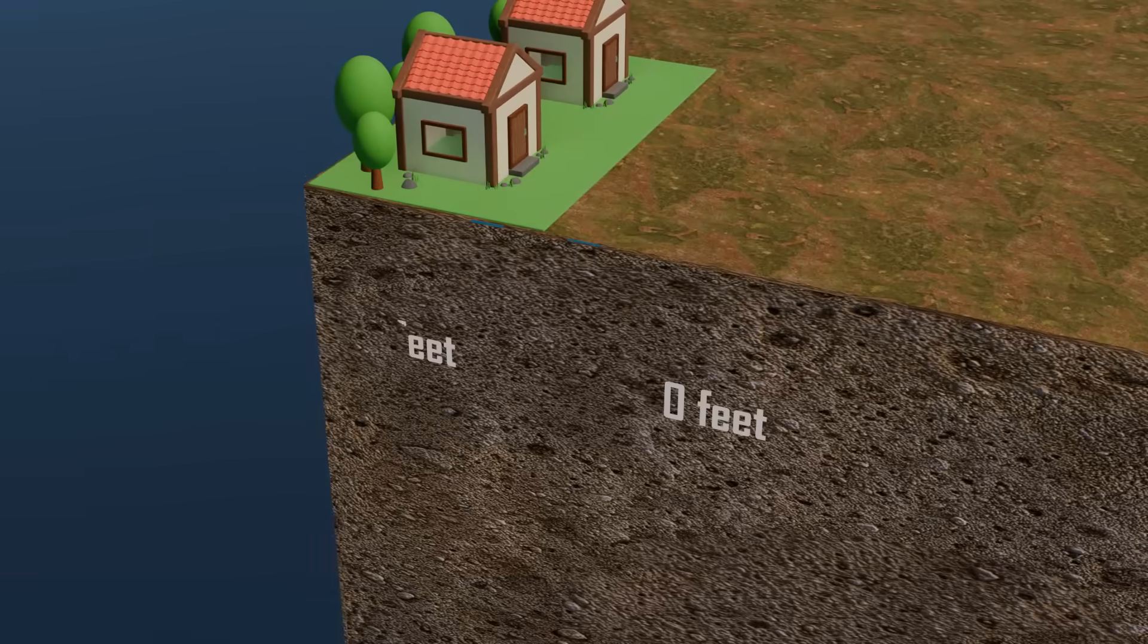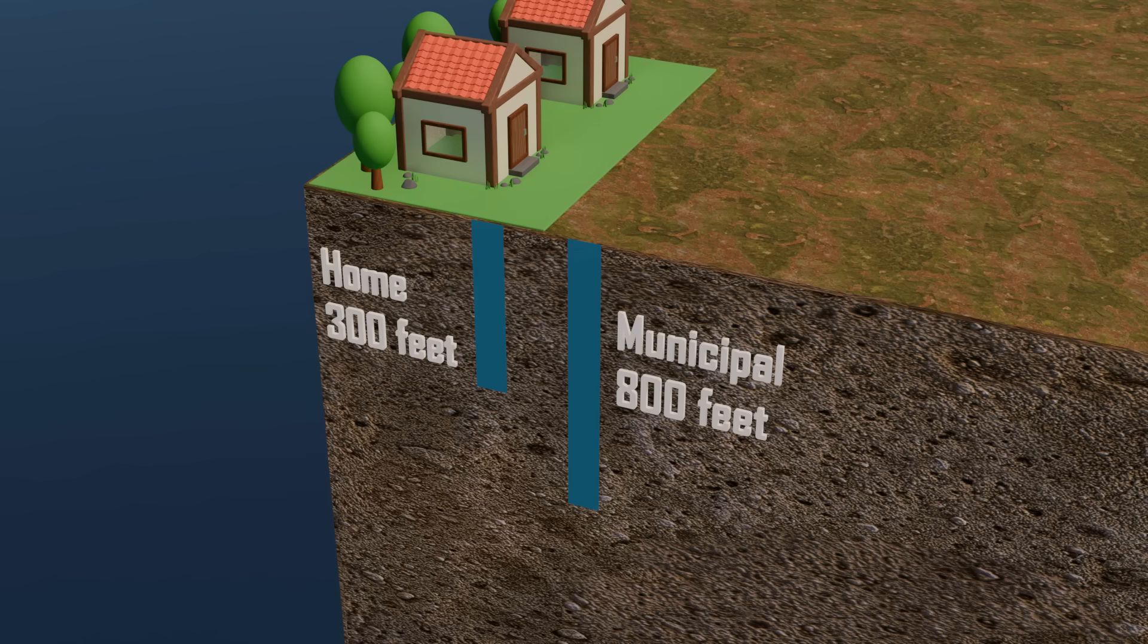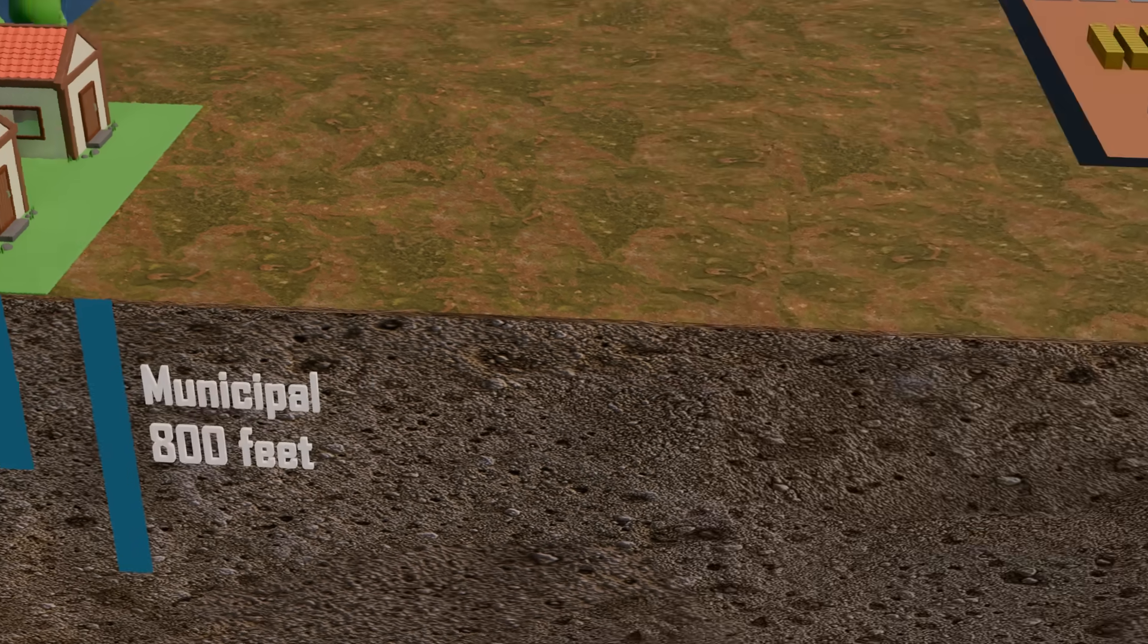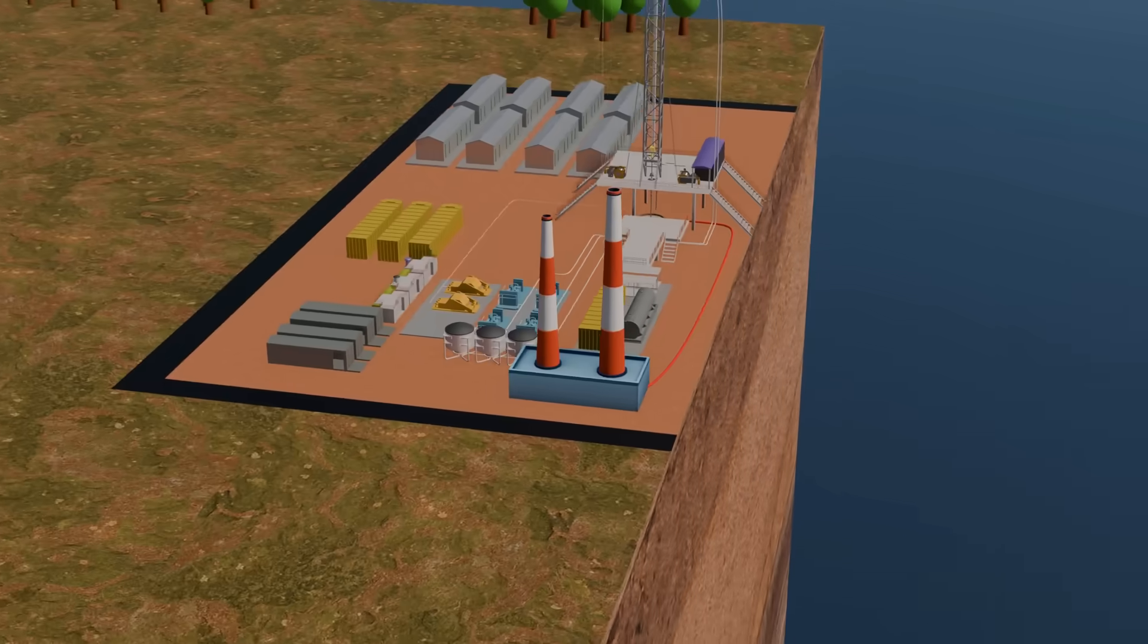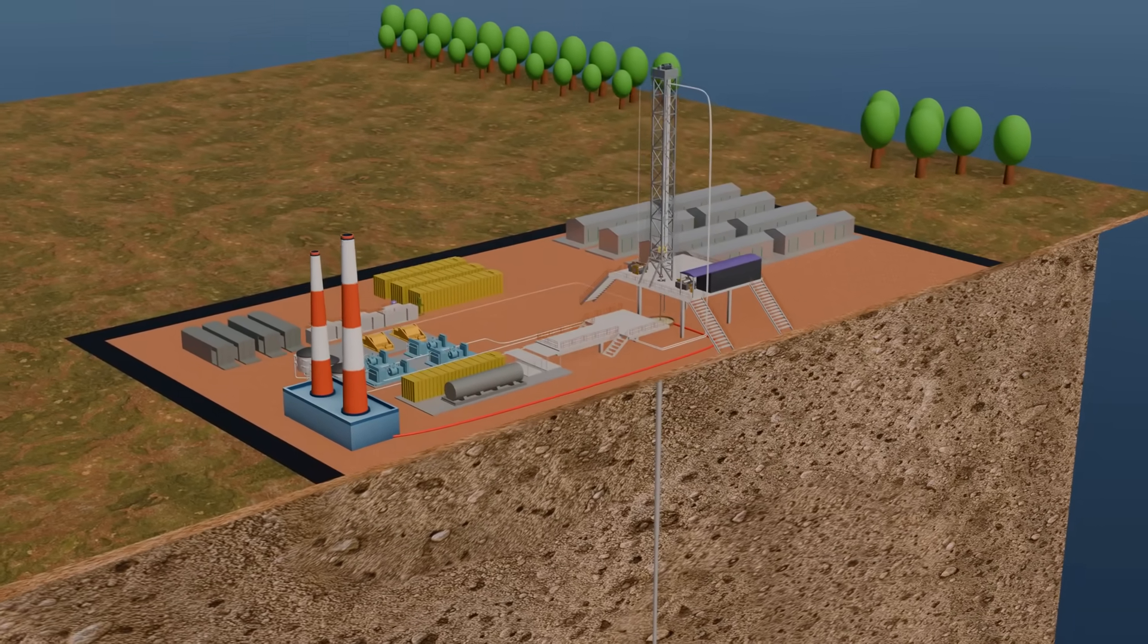Generally, our personal and municipal water bore wells can reach depths of up to around 800 feet. However, the bore holes used for extracting oil can be as deep as 7,000 feet or even more, which is equivalent to over 2 kilometers beneath the surface.